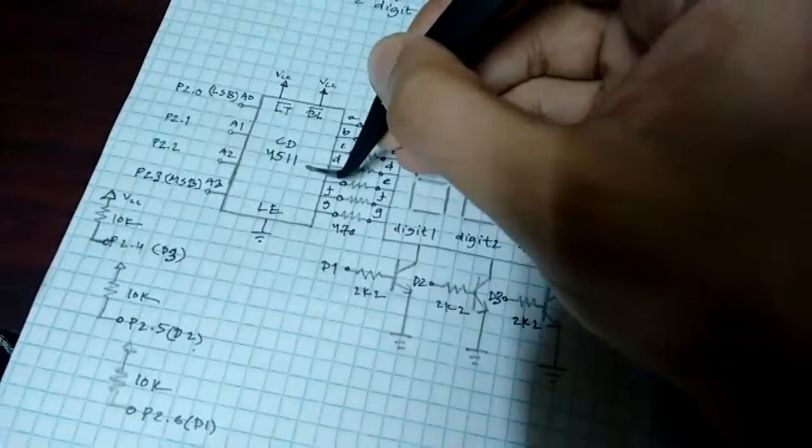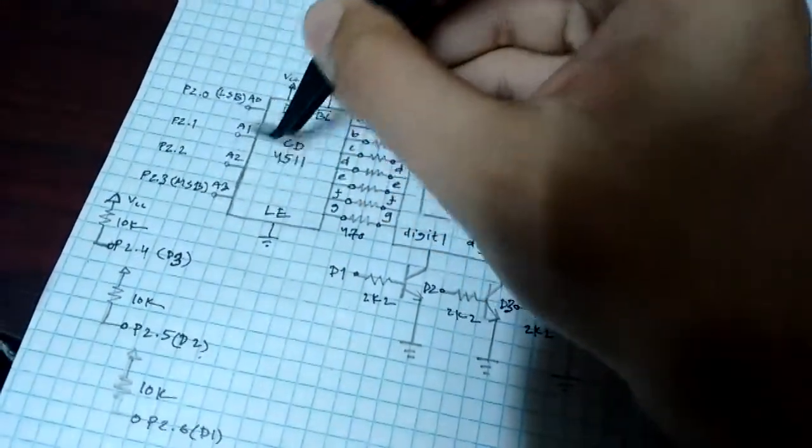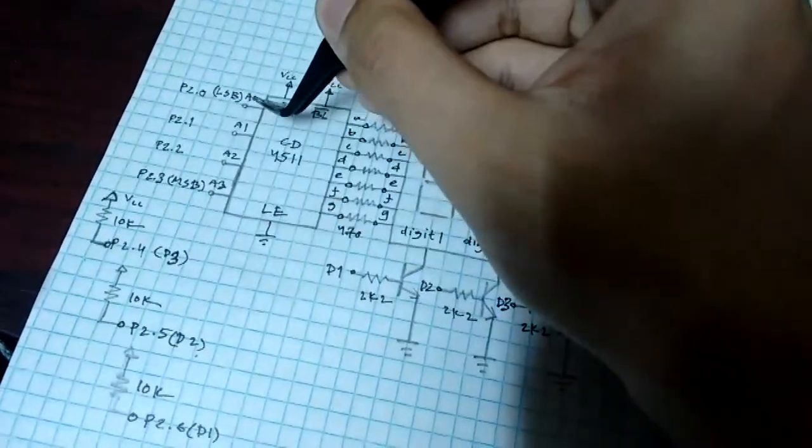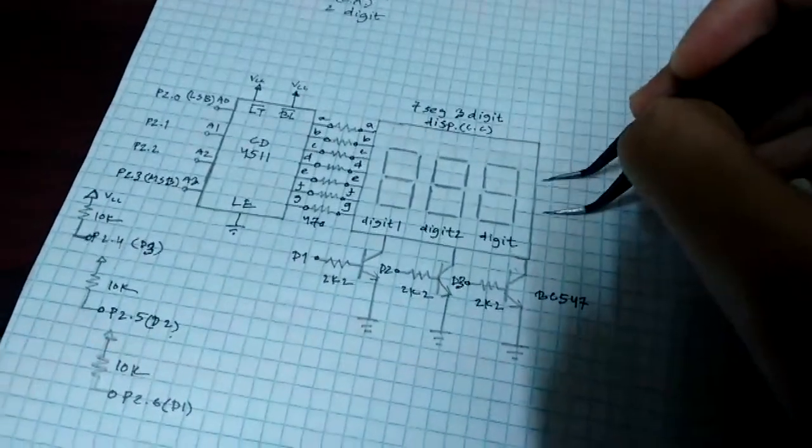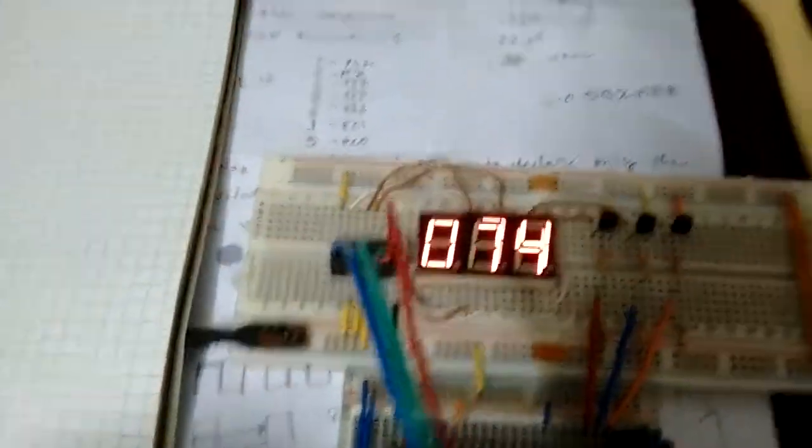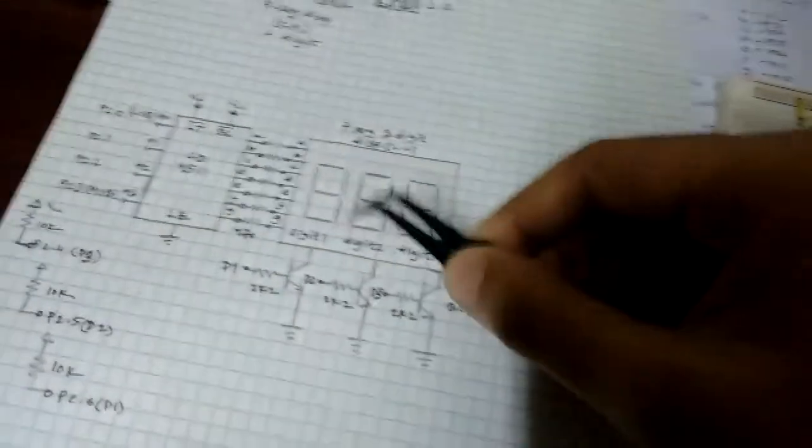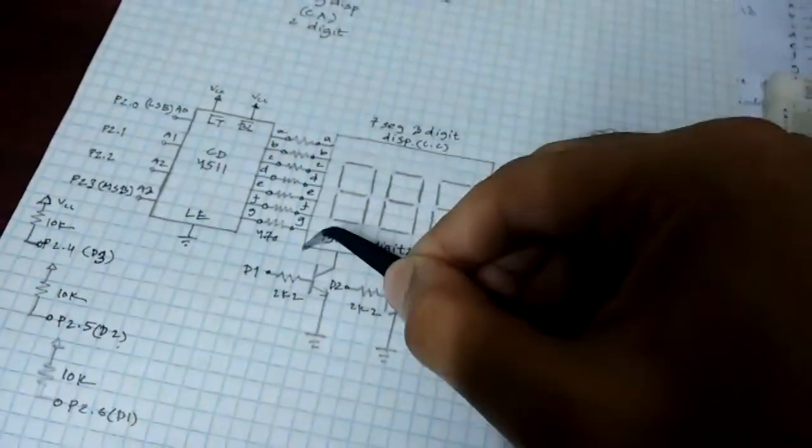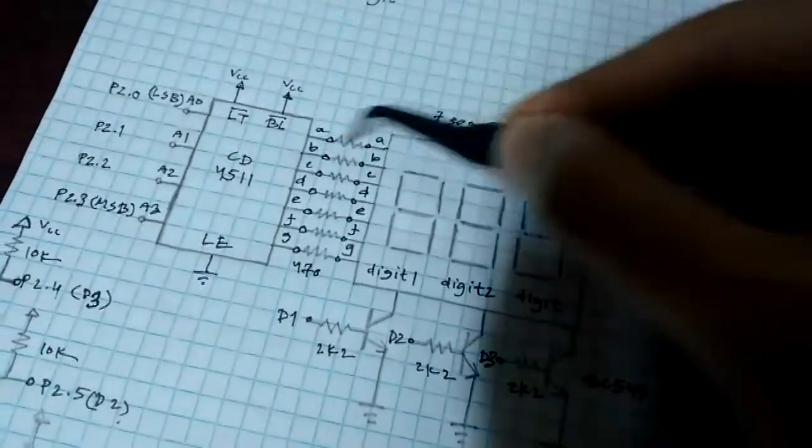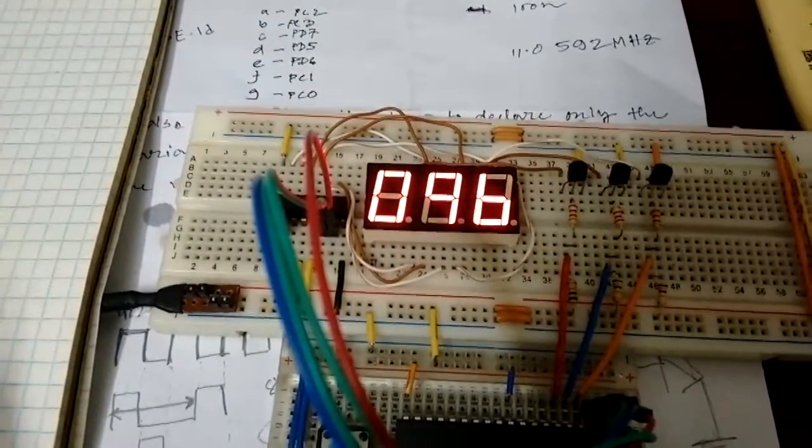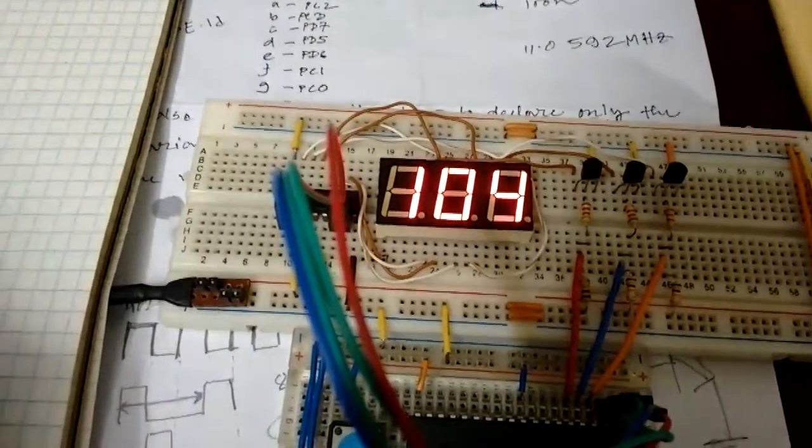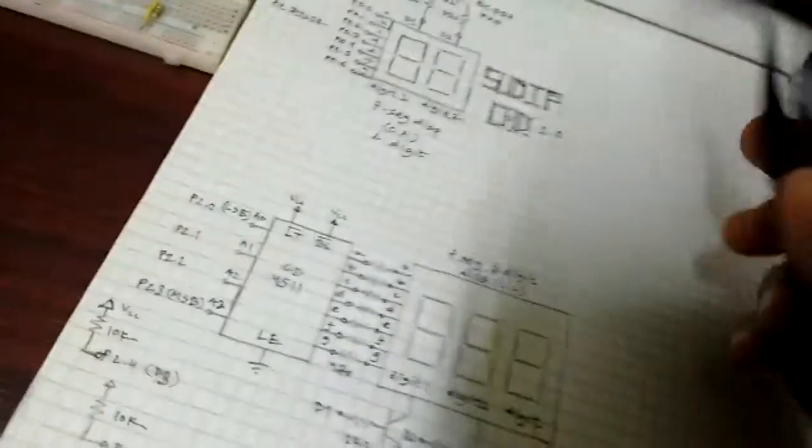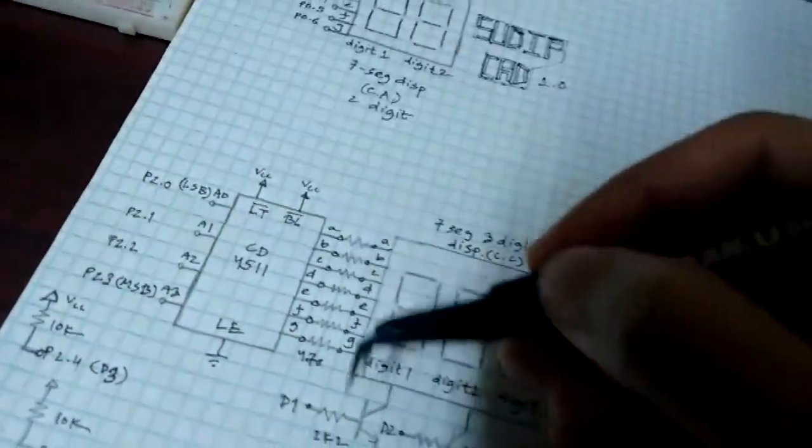The 4511 is an IC that takes BCD inputs, so four inputs for the digits zero to nine, and then converts it to common cathode code and drives the displays. This display has three digit control pins and A through G pins, and these pins are connected to 470 ohm resistors, but I'm not using any resistor here because after I've measured the current it's about 22 milliamps for each digit, which is obviously within spec.